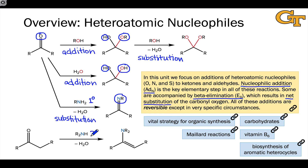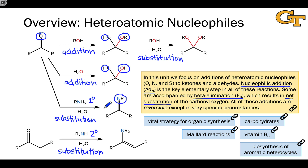When a secondary amine is used in this context, we end up with a slightly different product. It's actually an isomer of the product when a primary amine is used, but it contains a carbon-carbon double bond instead of a carbon-nitrogen double bond, and still remains a net substitution process. The product when a primary amine is used is called an imine, and the second is an enamine. We'll look at the formations of these products in detail in this video series, and their reactivity in a later series.